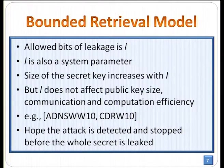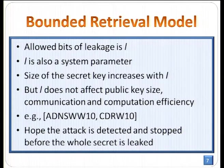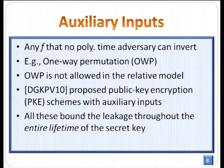We have the bounded-retrieval model proposed in 2010. They allow the leakage to still be L, but L is now considered as a system parameter, so the size of the secret key will increase with L. However, L does not affect the public key size, communication, or computation complexity. In these models, we hope the attack is detected and stopped before leaking L bits. But this may not be good enough, because it is quite difficult to stop leakage after L bits have been obtained.